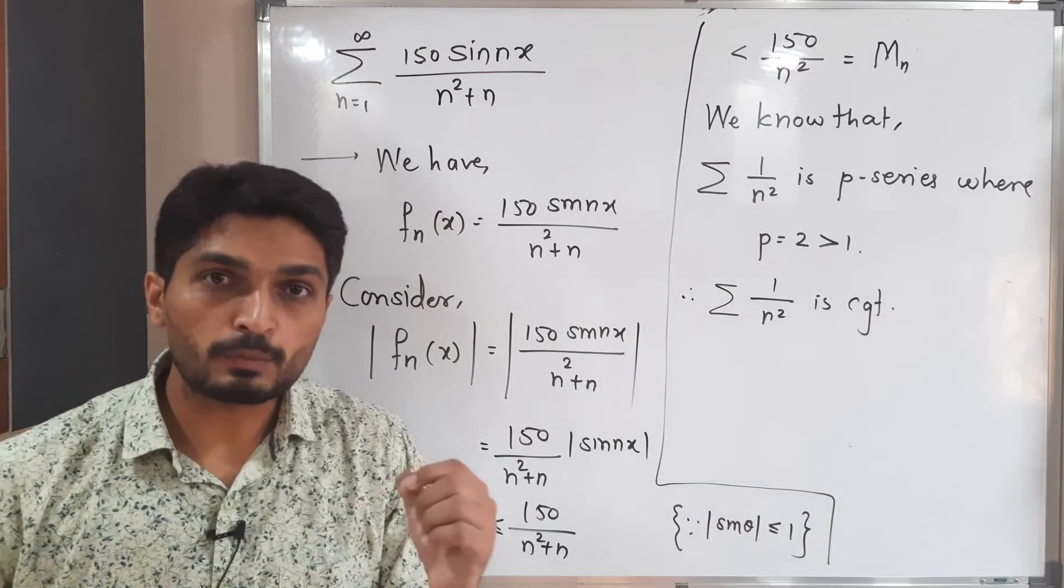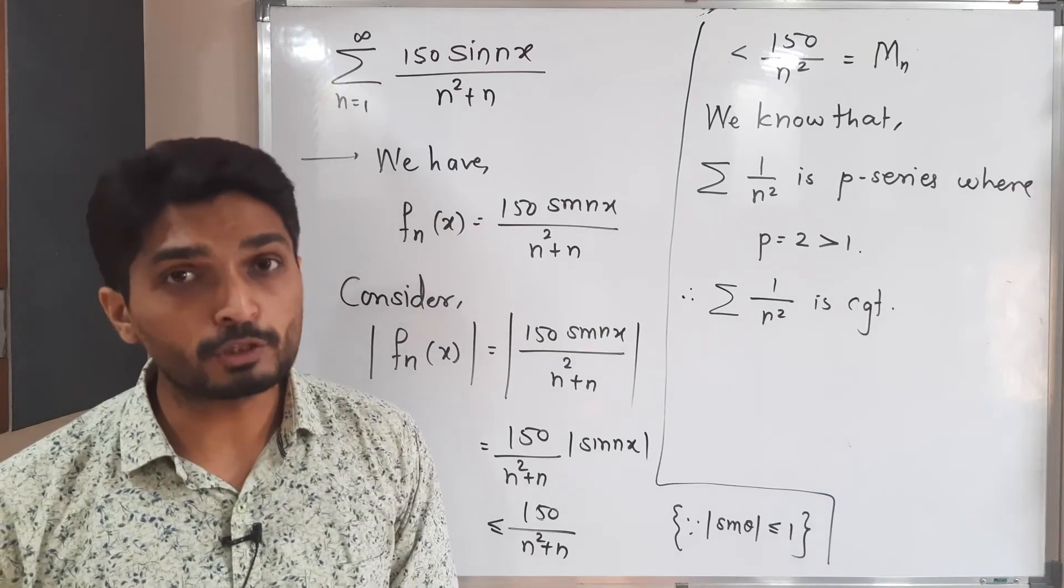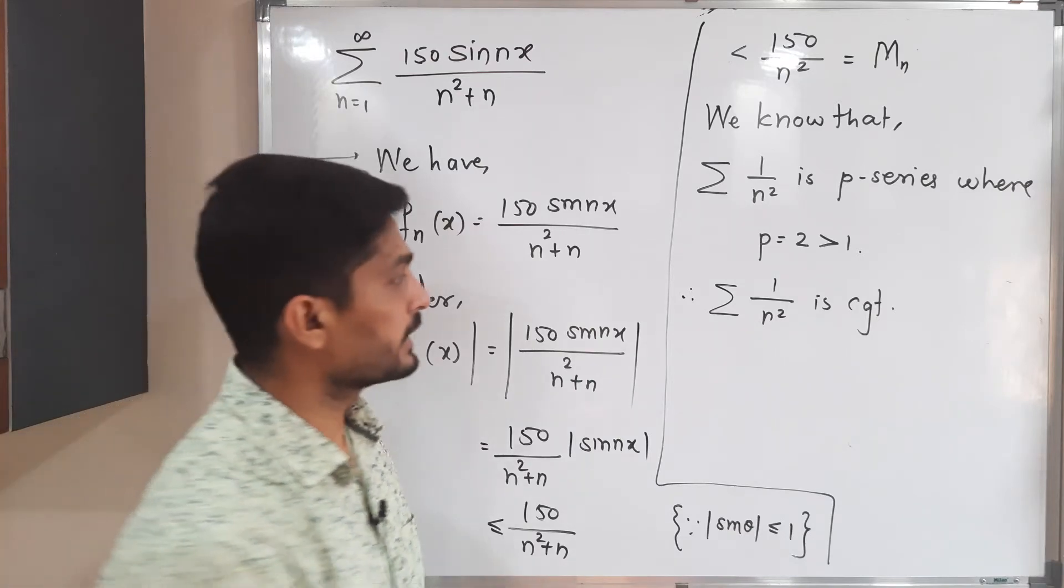If you multiply by some constant, then also it will be a convergent series. So I am going to multiply it by 150, so again it will be convergent.